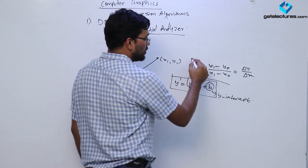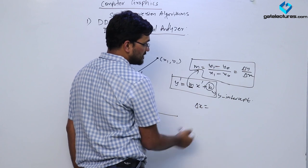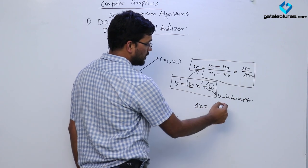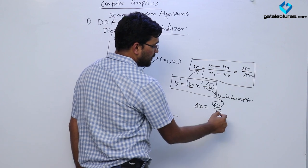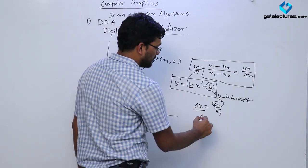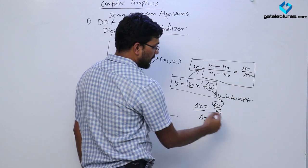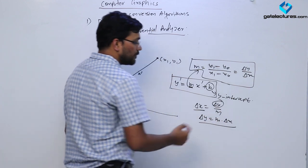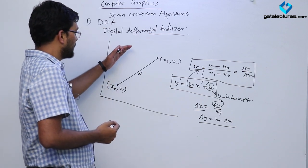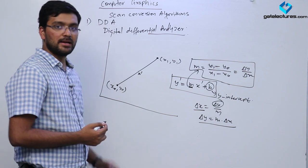These formulas we are going to heavily use while generating lines, so keep these two formulas in your mind. We can do a lot of things with these two formulas — if you know delta y and m, you can compute delta x; similarly if you want to compute delta y and you know m and delta x, you can just play around with these equations. So let's see what the DDA algorithm is.